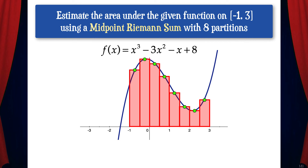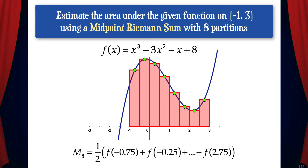Finally, let's estimate the area under the given function using a midpoint Riemann sum with 8 partitions. We'll write M sub 8, where M stands for midpoint and 8 stands for 8 partitions. We already have delta x, which is 1 half. Now we need to determine the function values to add. The first function value is halfway between negative 1 and negative 0.5, which is negative 0.75. Then we increment to the right by delta x, which is 1 half, until we reach the last rectangle. So the M sub 8 equation is 1 half times the quantity of f of negative 0.75 plus f of negative 0.25, continuing by increments of 1 half until we get to f of 2.75.